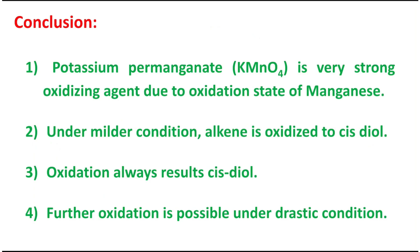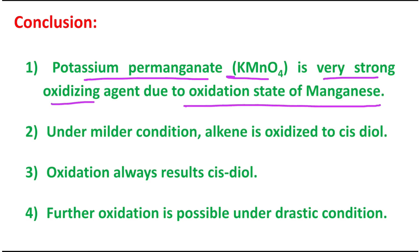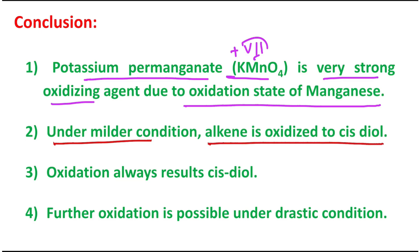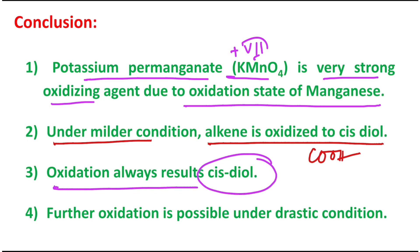What we have learned: potassium permanganate is a very strong oxidizing agent due to the higher oxidation state of manganese, which is +7. Under milder conditions the alkene is oxidized to a cis diol. But remember, if conditions are more drastic, further oxidation can happen and ultimately it produces a dicarboxylic acid. The oxidation always results in a cis diol because the intermediate is a manganate ester ring compound. Further oxidation is possible under drastic conditions.